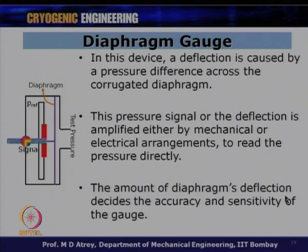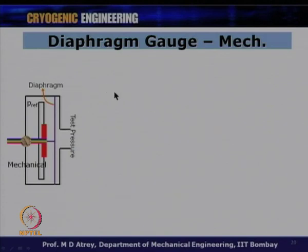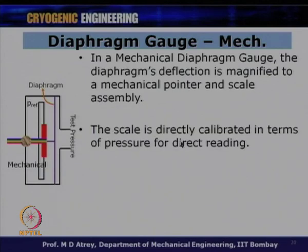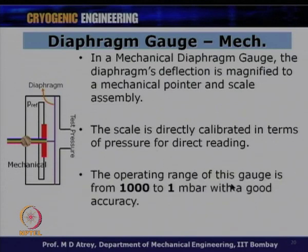The amount of diaphragm deflection determines the accuracy and sensitivity of the gauge. In a mechanical diaphragm gauge, the deflection is magnified via a pointer and scale assembly, directly calibrated in terms of pressure. The operating range of this gauge is from 1000 to 1 millibar with good accuracy.